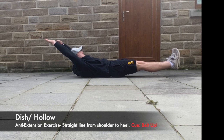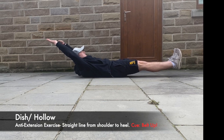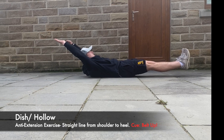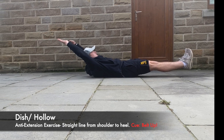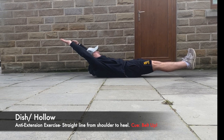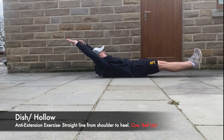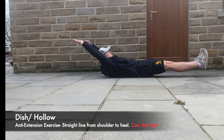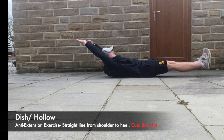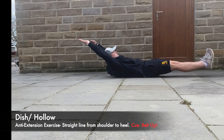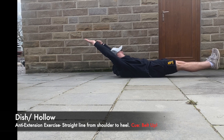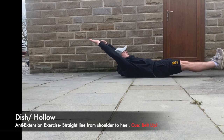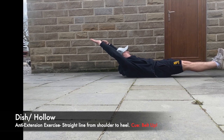The second exercise to improve core stability is the hollow or dish. Again, this is an anti-extension exercise however in an open chain position. This exercise can be progressed with duration or addition of weights to the extremities, however the athlete has to maintain the belt-up position.